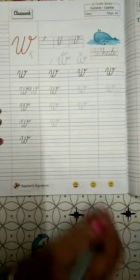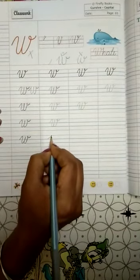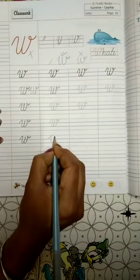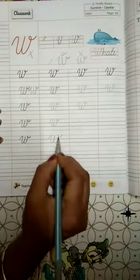Now, I will write here so you can understand next. W, W, W, W, W. Just write like this.